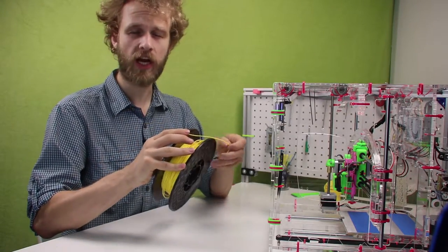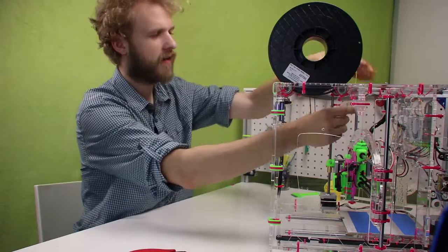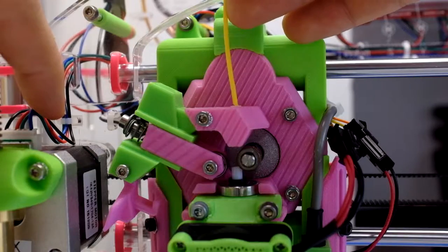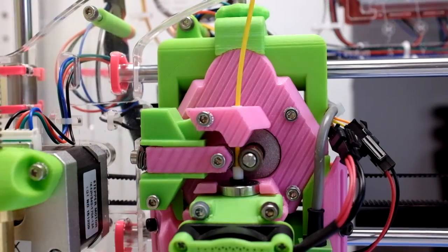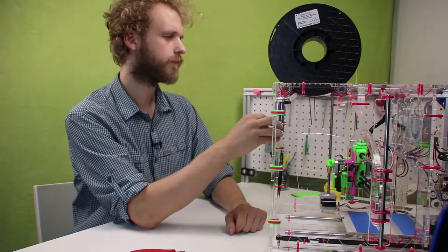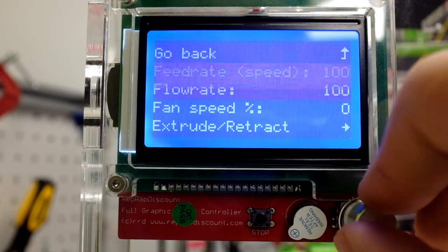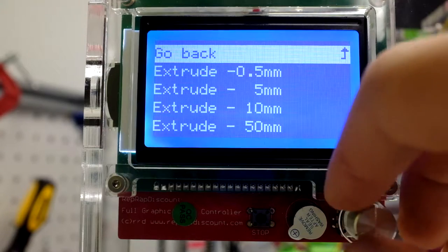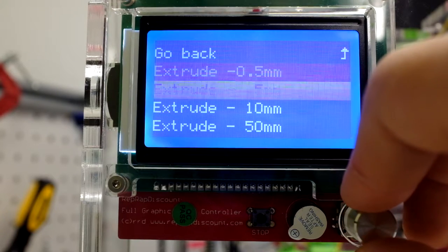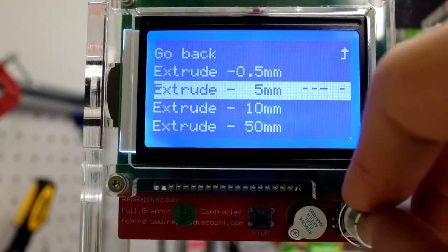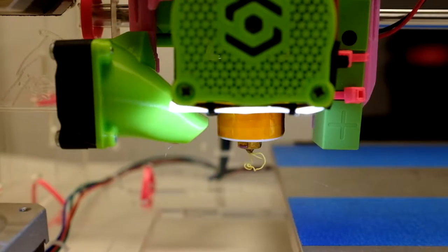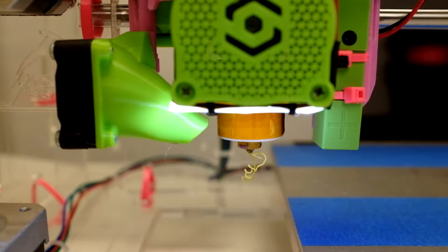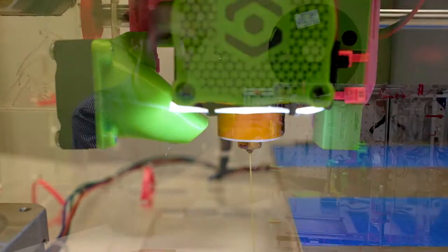Once the nozzle is heated up, load the filament. Now go to adjustments, extrude retract and extrude 5 or 10 millimeters of filament. Repeat extruding 5 or 10 millimeters of filament until you get an even flow.